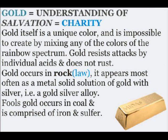Gold itself is a unique color and is impossible to create by mixing any of the colors of the rainbow spectrum. Gold resists attacks by individual acids and does not rust. Gold occurs in rock, or law. It appears most often as a metal-solid solution of gold with silver, i.e. a gold-silver alloy. Fool's gold occurs in coal and is comprised of iron and sulfur.